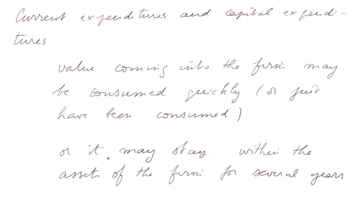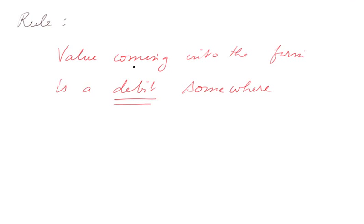For both types of value coming into the firm, the same rule applies: value coming into the firm is a debit somewhere. If it is difficult to remember, remember that we created the debtor's account with a column called debit, to record an IOU coming into the firm as a payment from a client. This IOU could not be recorded into the cash account, otherwise it would have created all sorts of difficulties, so we recorded it in a new page in a debit column.